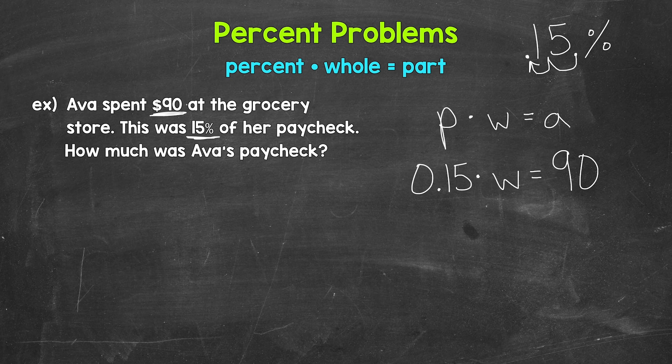Basically with this equation right here, we're finding 15% of what number equals 90. Now we solve and we just have a one step equation here. We need to isolate the variable of W.